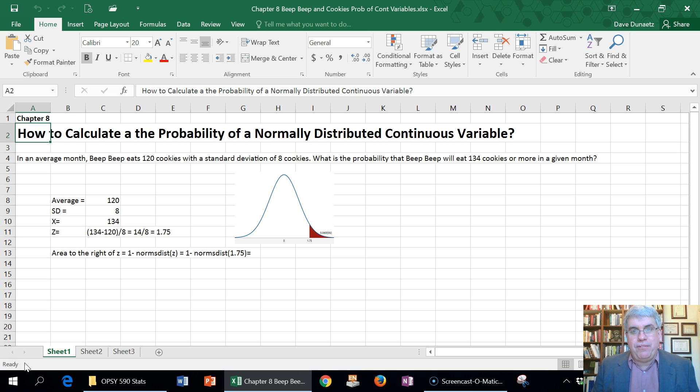Okay, because maybe 134 is the world's record or something like that. We want to find out if it's likely that he'll beat that or how likely would it be that he'd beat it this month? Well, what we need to do is we've got a bell curve describing his eating habits where the 120 is in the middle. Now, it'd be a Z score of zero, and it's eight from the middle to over here. That's the standard deviation. And we want to calculate the area that is 134 cookies or more, that tail over there.